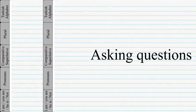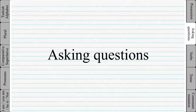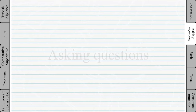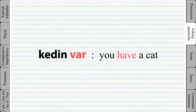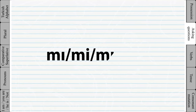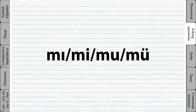Asking questions. Earlier we learned how to say 'you have' or 'you don't have' something by adding 'var' or 'yok' after the suffixes. Now, to make it a question sentence, we add one of four question words — which one to use again depends on the last vowel of the word.